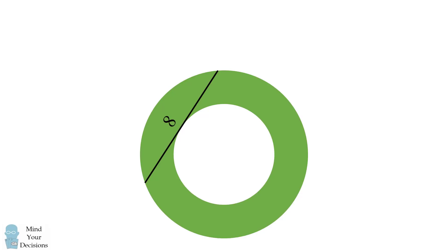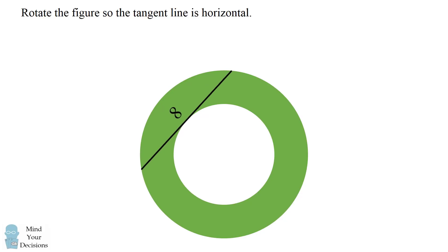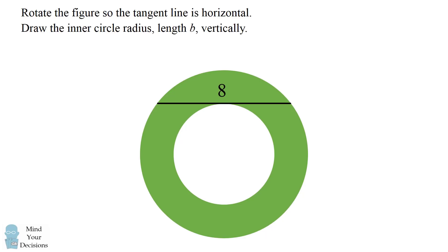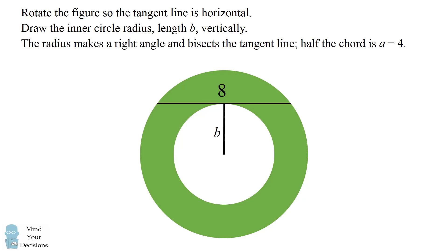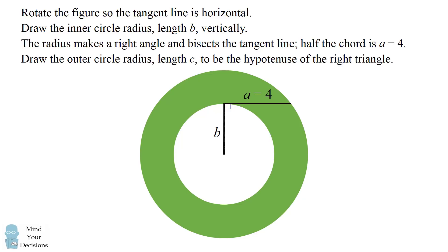We'll first adjust the diagram in several ways. We'll rotate the figure so the tangent line is horizontal. Next, we'll draw the inner circle radius with length b vertically. The radius makes a right angle because the line is tangent, and it bisects the tangent line. So half of the tangent line will be a length of 4. I'll draw one of the halves as a equals 4. Finally, draw the outer circle radius with length c to be the hypotenuse of the right triangle.